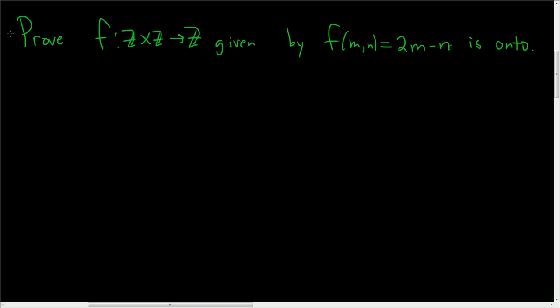A function from the direct product Z cross Z, where Z is the integers, into Z, given by f(m,n) equals 2m minus n. We're asked to prove it is onto. Proof.